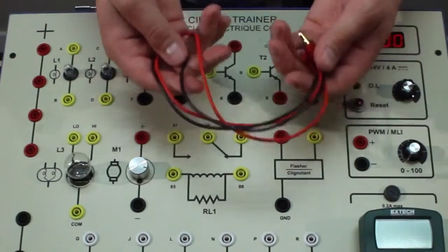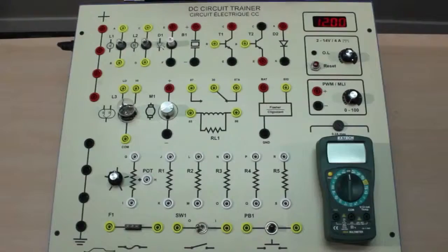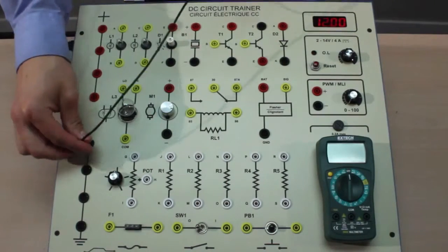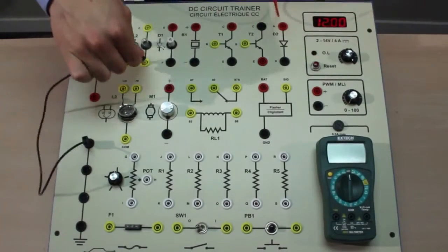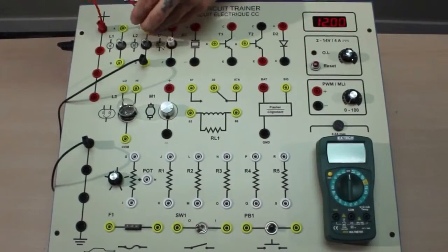All of the wiring on the trainer is done by the students using jumper leads with standard banana plugs. So if they want to wire up a light bulb for example, we're going to take ground to the light bulb and then to power. With this the light bulb will turn on.